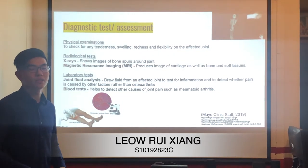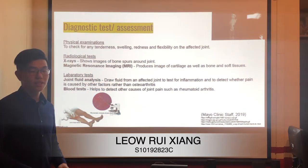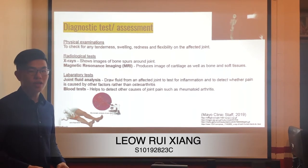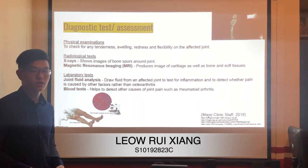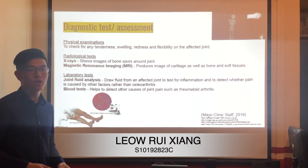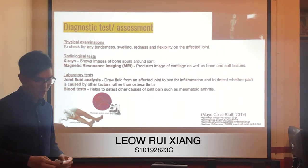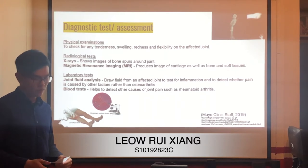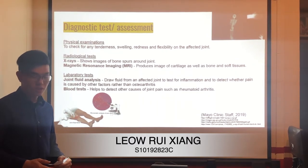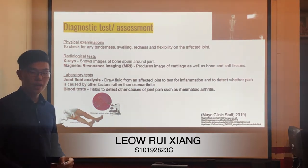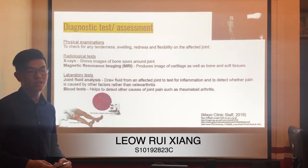Diagnostic tests and assessment: firstly, physical examination — the doctor checks the affected joint for tenderness, swelling, redness, and flexibility. Next, radiological tests such as X-ray, which can show bone spurs but cannot directly image cartilage — it can be revealed through narrowing of the space between bones. Next, MRI, which produces detailed images of cartilage, bone, and soft tissue. MRI is not commonly needed to diagnose osteoarthritis but can provide more information in complex cases.